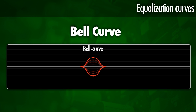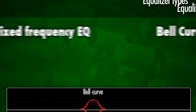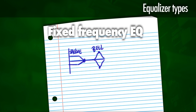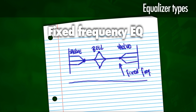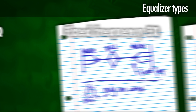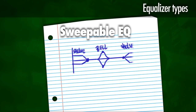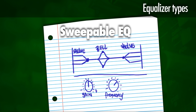Let's take a look at some types of equalizers. A fixed frequency equalizer can be a shelving or bell type, but it only offers one control — it can boost or cut. A sweeping equalizer can also be a shelving or bell type, but it offers two controls: frequency and a gain parameter.